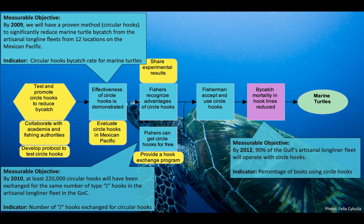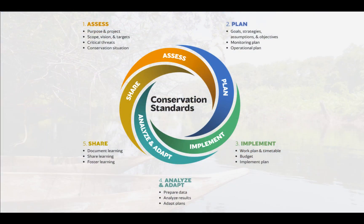This slide shows how the team used the results chains to set short and long-term objectives in the blue boxes. These depict the desired changes that they believed would be necessary to reach their goal. So this concludes our review of the Conservation Standards Step 1, Assess, and Step 2, Plan.